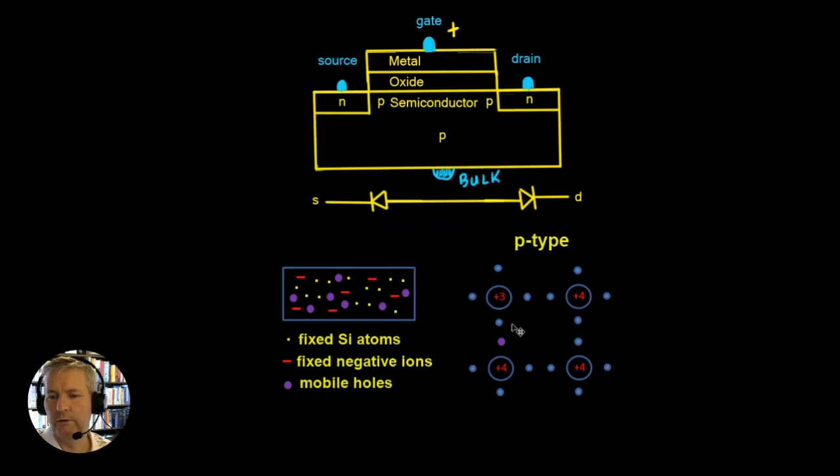So in effect what we've done is we've changed the conductivity of this device, of this material. So the material is going to look very very conductive for electrons. That is we're going to allow electrons to flow from this point here all the way through. So in effect the material in here we could say has become inverted.